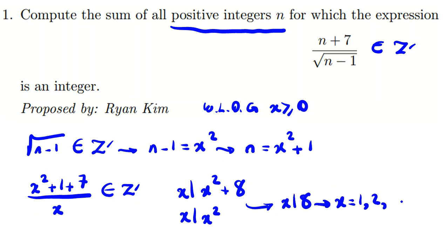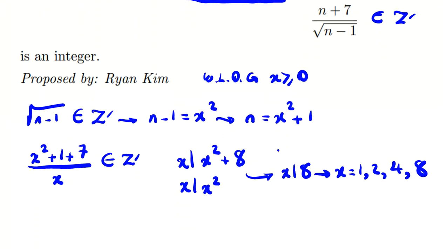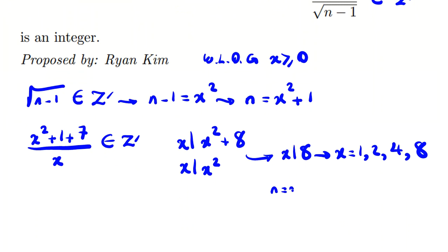We can say x can be 1, 2, 4, or 8. n is what? n is x squared plus 1. So for each of them we should see that this one n is what, 2. For this one n is 4, 2 square, 4 plus 1 is 5. For this one 4 square 16 plus 1 is 17. For this one 65.